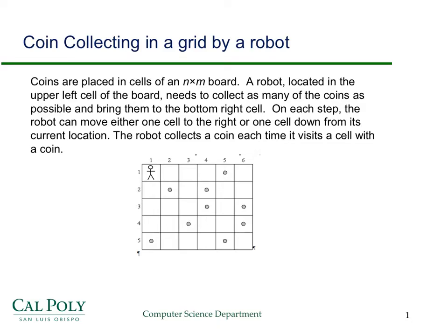There are many other paths — in fact, this grows exponentially in the size of the board. Here's another simple path where the robot just goes right and then down; that would pick up three coins. The robot could also go right, down, right, down, down, down, right, right, and would pick up three coins. What we want to do is find the path that allows the robot to pick up the most coins.